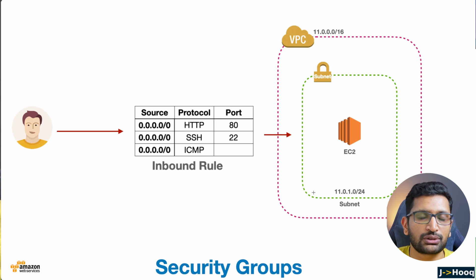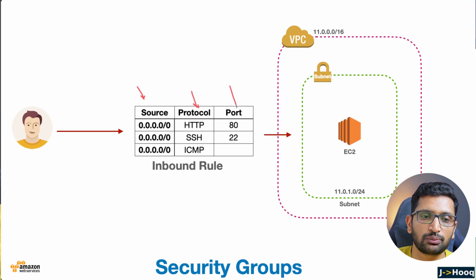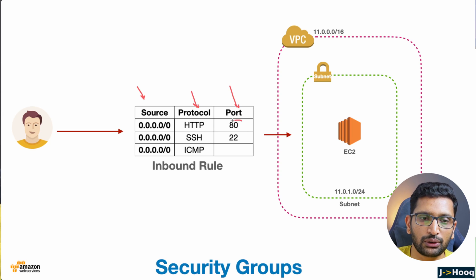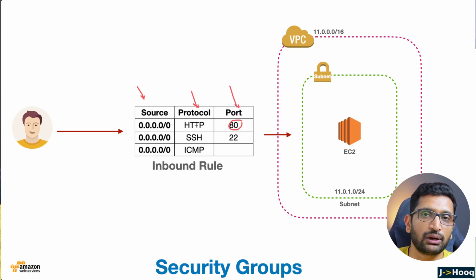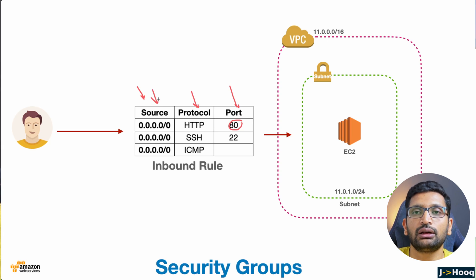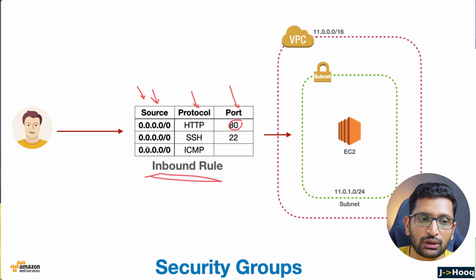There are three components to your security group: source, protocol, and port. For port, if you are running an application on a certain port then you should define that port in the port section. For protocol, you should know what kind of protocol you are using — whether it's HTTP, HTTPS, TCP, ICMP, or SSH. The third thing is source, where you define the IP ranges from which you want to validate the incoming request for your inbound rule.